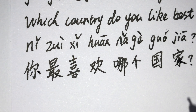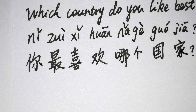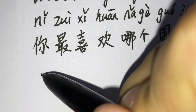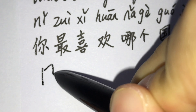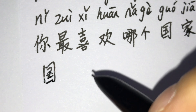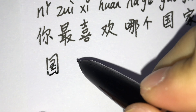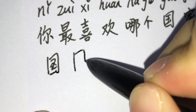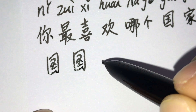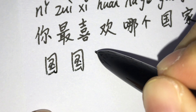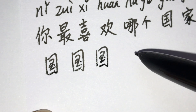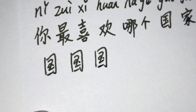Now let's write 国 (guó) in cursive. Guó, guó, guó, guó.